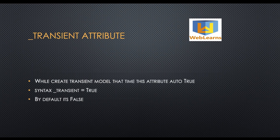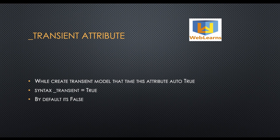The underscore transient attribute was already discussed in the wizard or transient model session. There are three types of models: a simple model, an abstract model, and a transient model. When you use a transient model, underscore transient is true by default. The supported data type is boolean. If you are using an abstract class, underscore transient is automatically false, and if you are using a transient model you do not need to override this attribute.